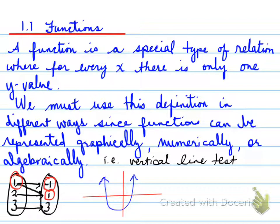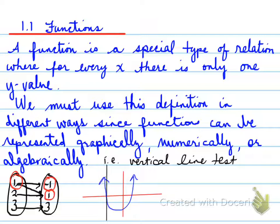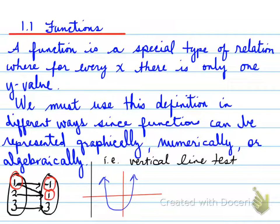Let's look at the graph. We could draw a vertical line and drag it right across our graph. As we drag it across, this vertical line test tests to see how many times it touches the graph. You can see it only crosses the blue parabola once throughout. Therefore, because it passes the vertical line test, this must be a function.